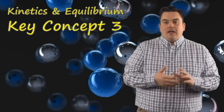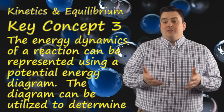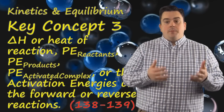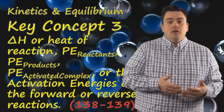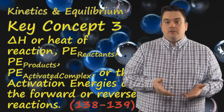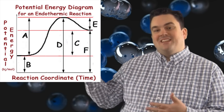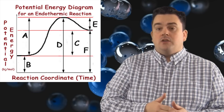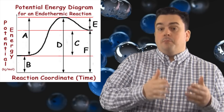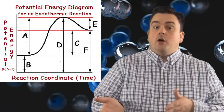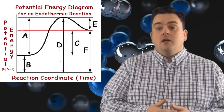Kinetics in Equilibrium, Key Concept 3. The energy dynamics of a reaction can be represented using a potential energy diagram. The diagram can be utilized to determine delta H (heat of reaction), the potential energy of the reactants, the potential energy of the products, the potential energy of the activated complex, and the activation energies of the forward or reverse reactions. When we talk about total potential energy of any part of this, we measure from the bottom up. Letter B, at the beginning, represents the total potential energy of the reactants, since we always start with reactants.